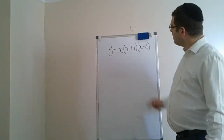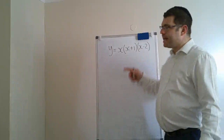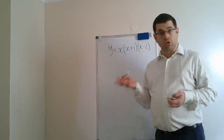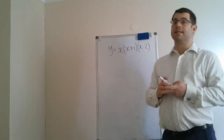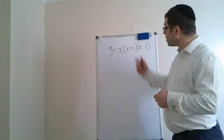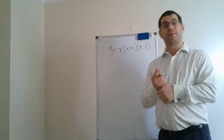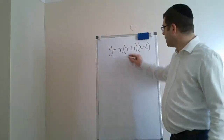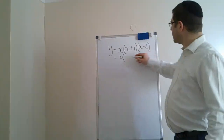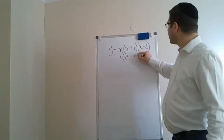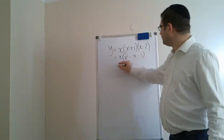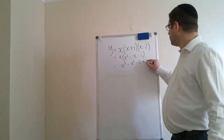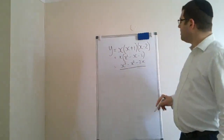Now this graph is a cubic, and as I mentioned before it always helps to draw a graph if one is not provided in the exam question. Cubic graphs are part of the course you're expected to be able to draw. So let's first expand this cubic: we get x squared minus x minus 2, and then x cubed minus x squared minus 2x.